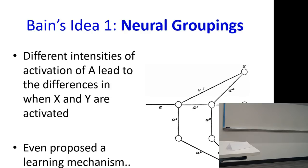Bain's model was actually the first modern artificial neural network proposal. Everything that we are doing today is not a modern invention — artificial neural networks as we know them were proposed in some form way back in 1873. That's going back 145 years.